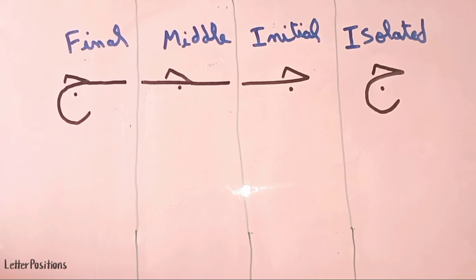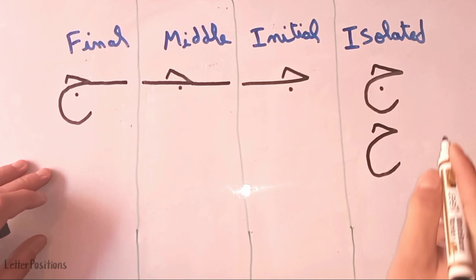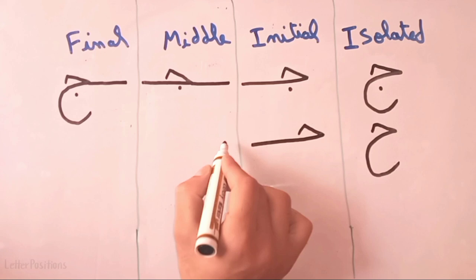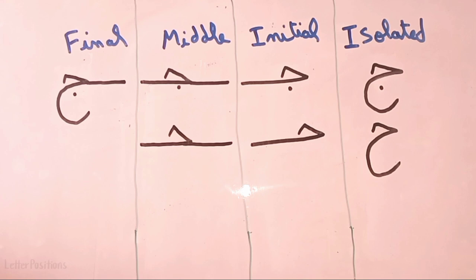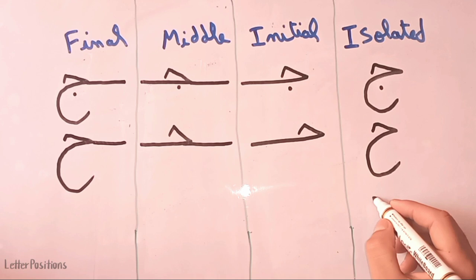In the final form, a straight line and the shape of al-jim with a dot underneath. This is the letter al-jim — it's easy. The next letter is harfu al-ha'. The same shape as al-jim — start from here and go straight. This is the initial form, and the middle form and final form are the same as al-jim.